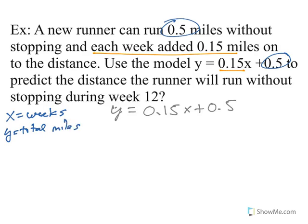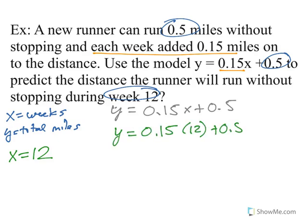In this case, we know week twelve is what we care about, so that means x equals twelve. In my equation, y equals 0.15 times twelve plus 0.5. We solve with order of operations, so we're going to multiply first. 0.15 times twelve is 1.8, and then we still have our half mile there at the end.